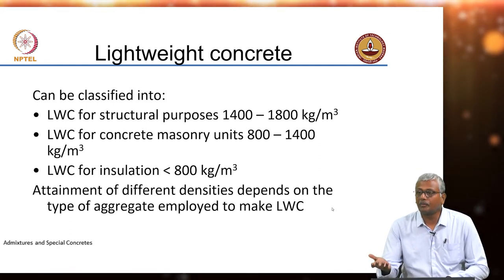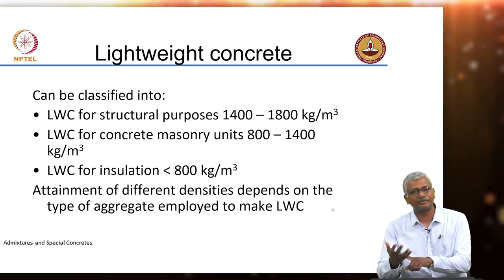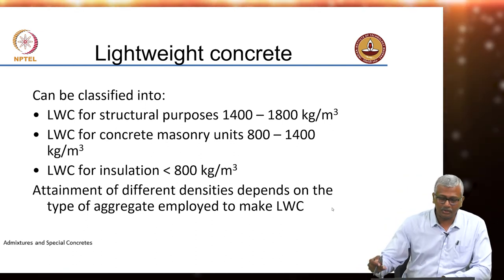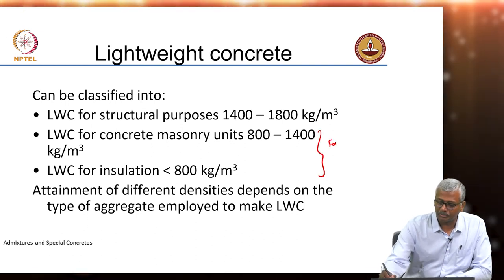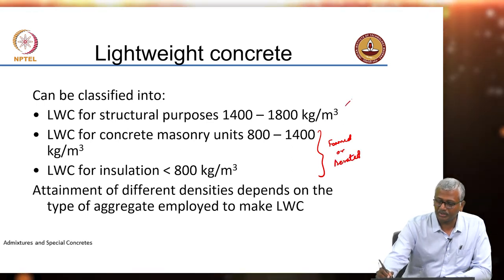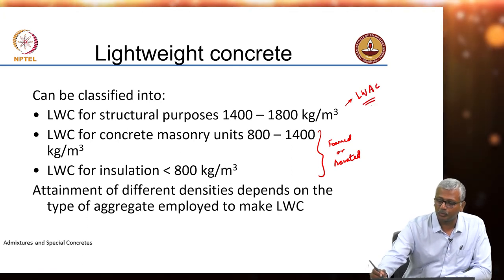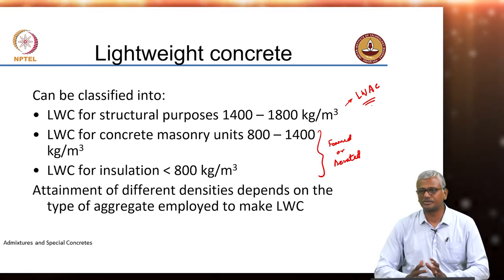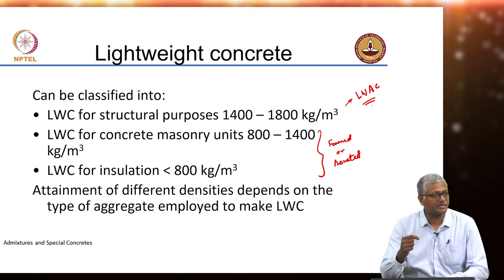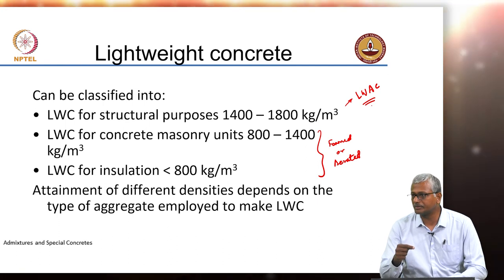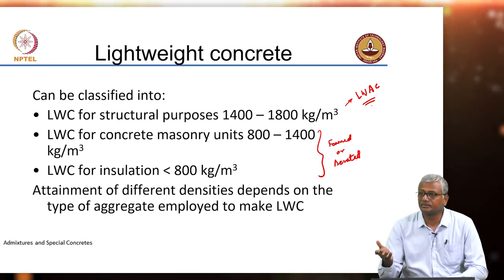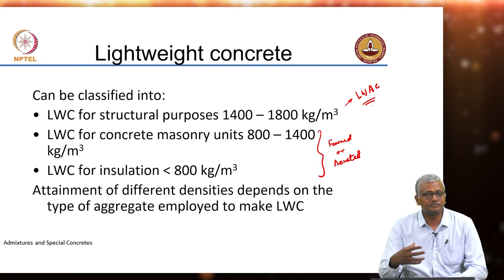Depending upon what you do to attain lightweight — either aggregates, foaming, or aeration — the densities will differ. For insulation-grade systems, foamed or aerated concrete is used. Lightweight aggregate concrete, or LWAC, sits on the higher density side of the lightweight range. For insulation purposes you would not typically go with aggregates unless you have aggregates with very low density, but it is still possible to make concrete with density less than that of water — 800 to 900 kilograms per cubic meter.